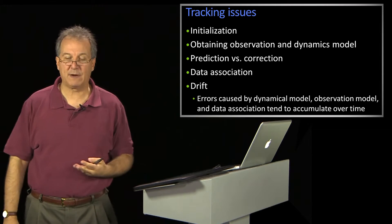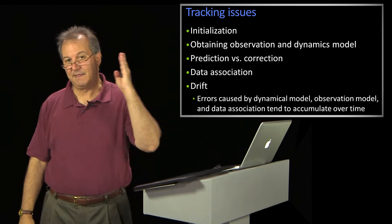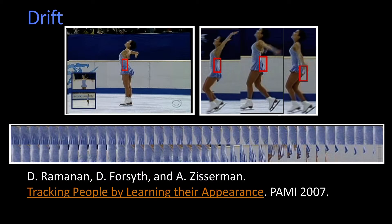So almost every tracker does some form of model update. The problem with that is when you do model update, you run into a situation like this. This was actually taken from the tracking people paper — they were explaining how not to do tracking. There's this little box stuck on the middle of the ice skater, and each time they're updating something about the description.